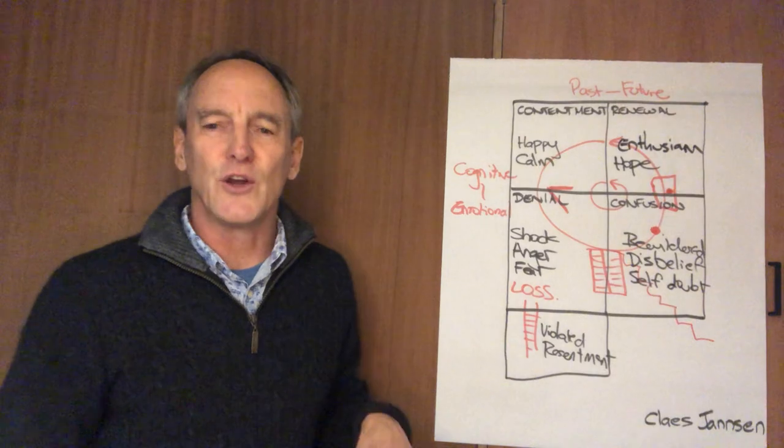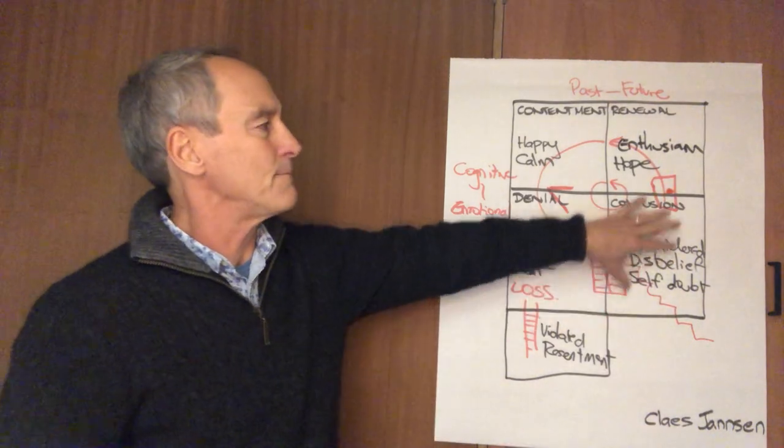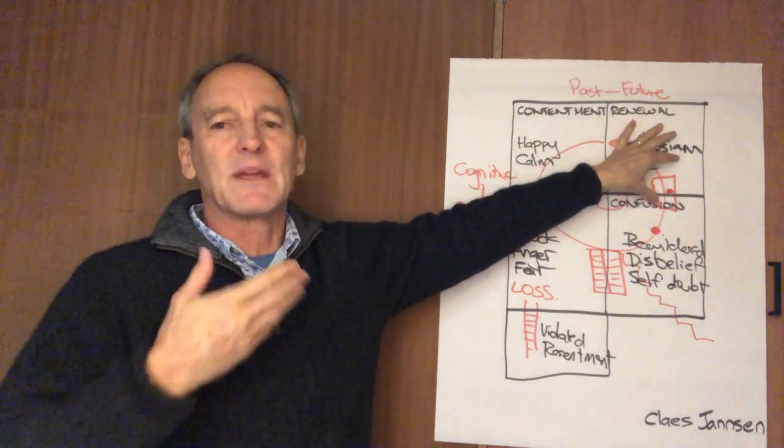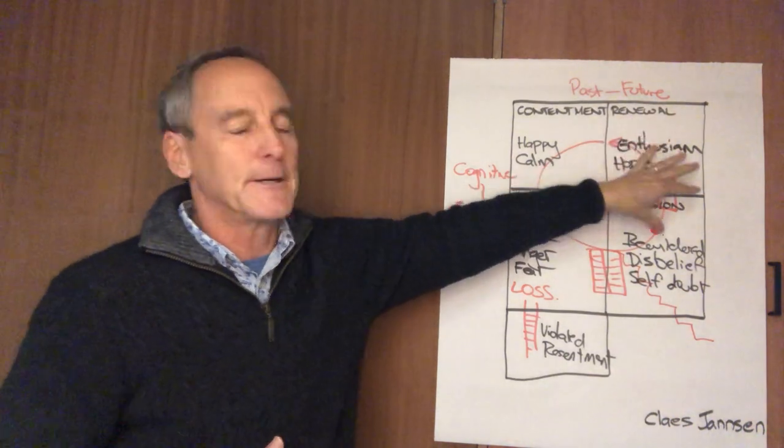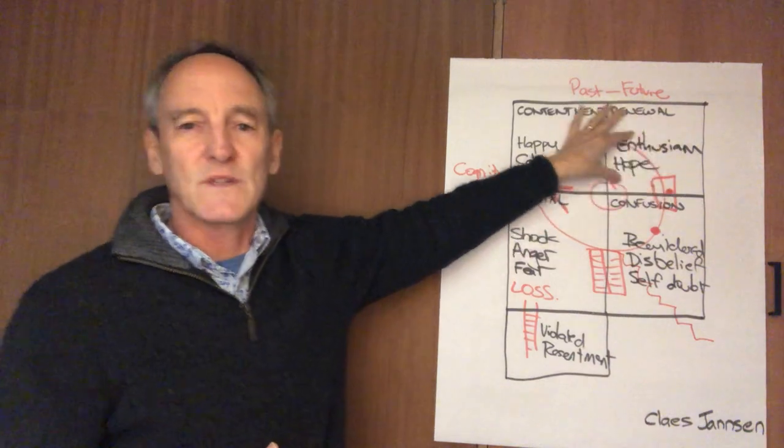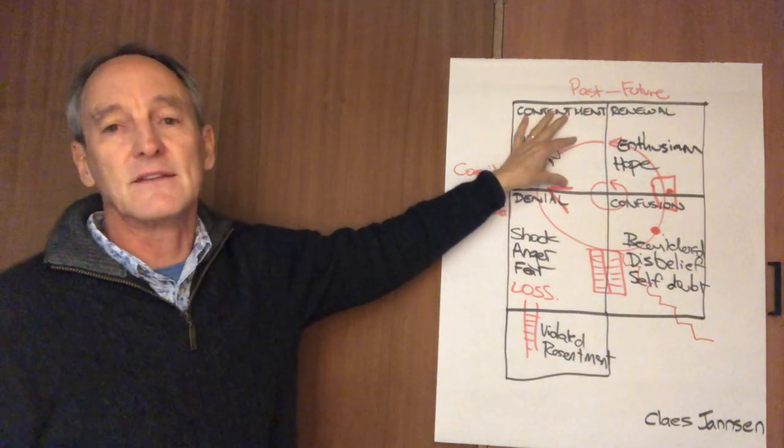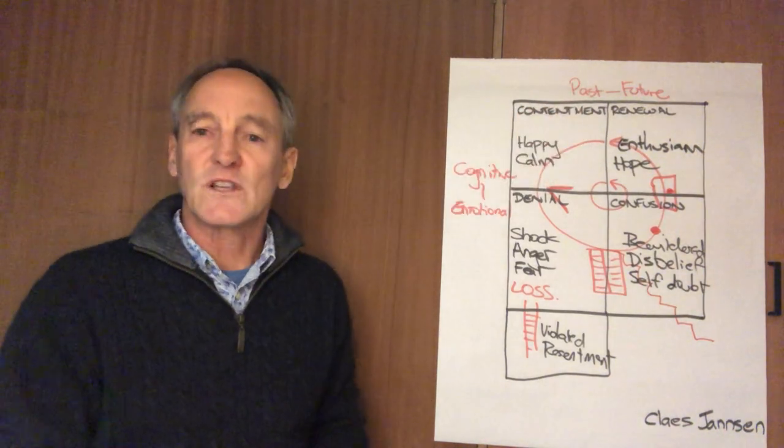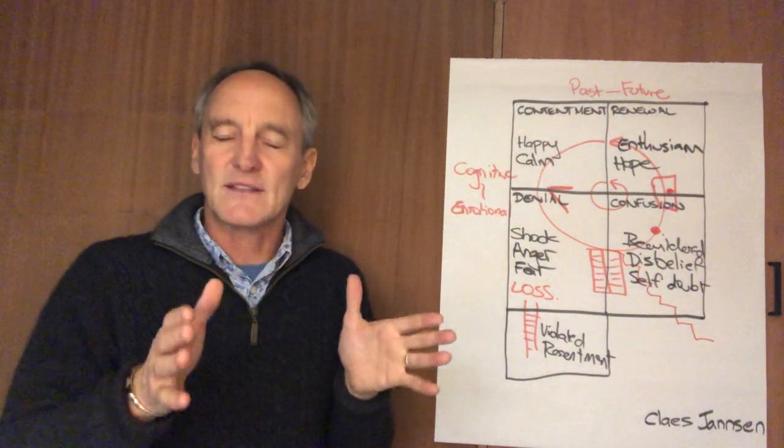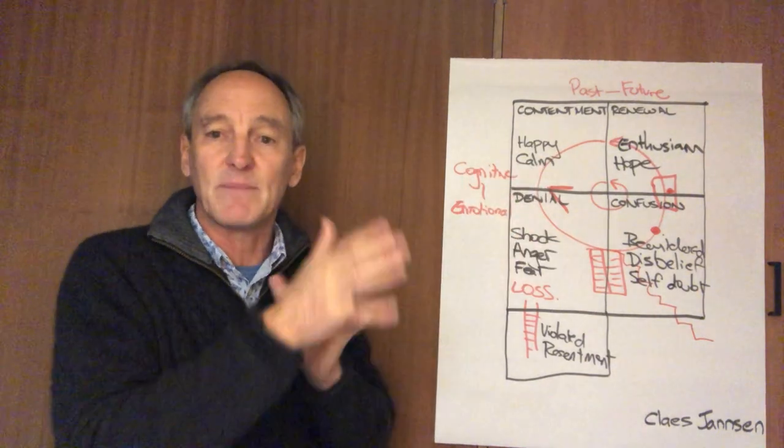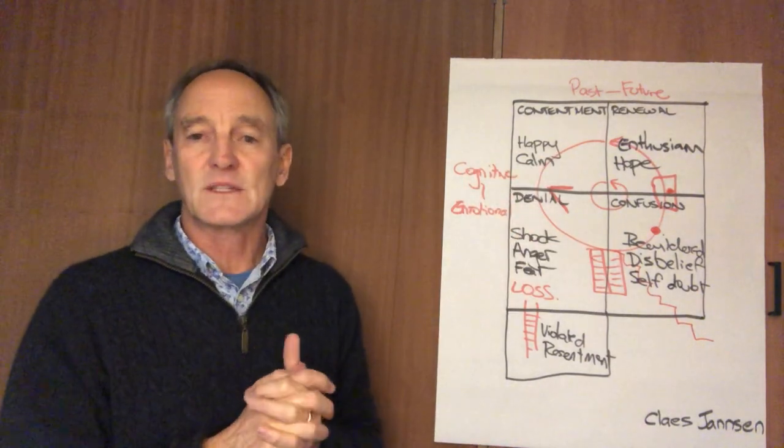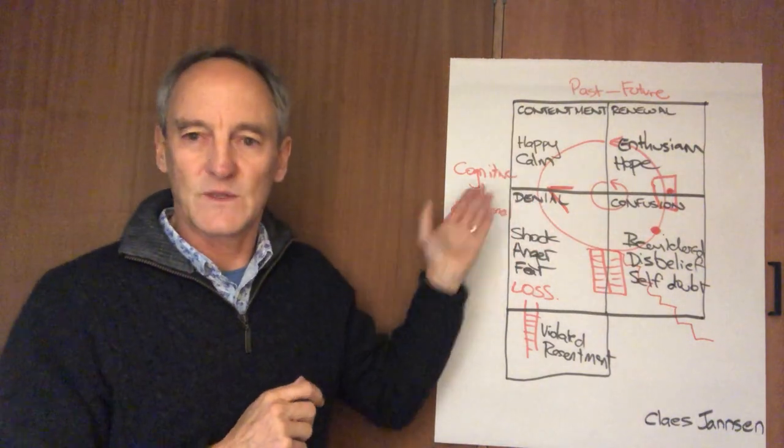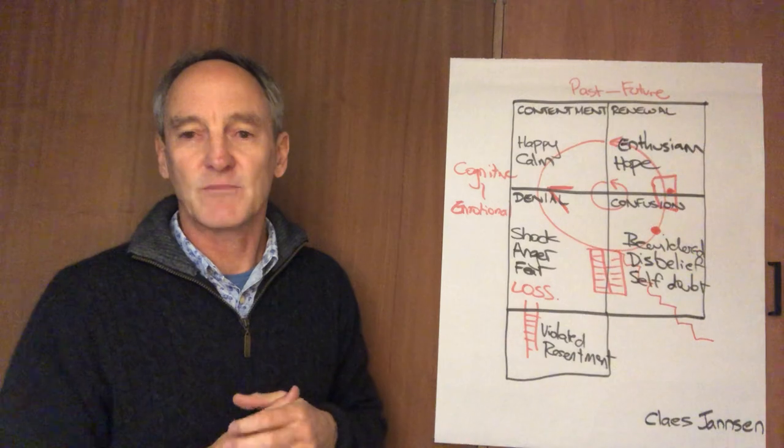At this point, people are really excited—they could be on a real high—and then as that becomes the new normal, whatever change process it was, then they would shift back into the Contentment space. Now, of course, as we know, there are multiple change processes in any organization, so you could have this happening in parallel, and you could have staff members sitting in multiple rooms across different change processes.